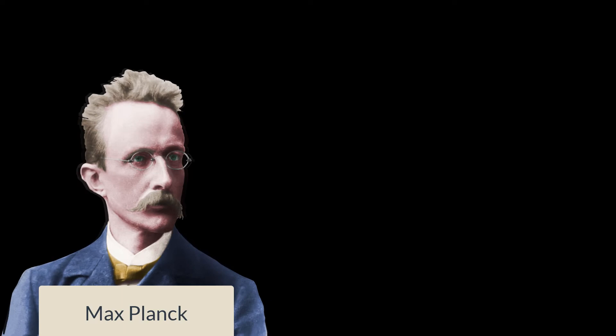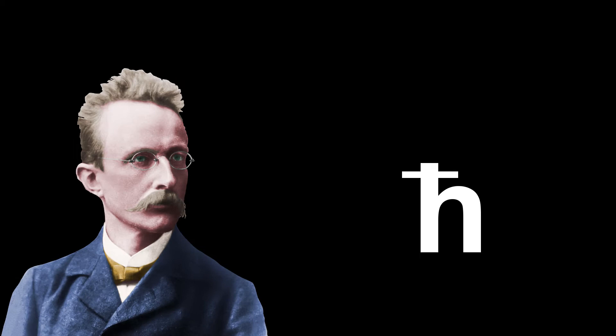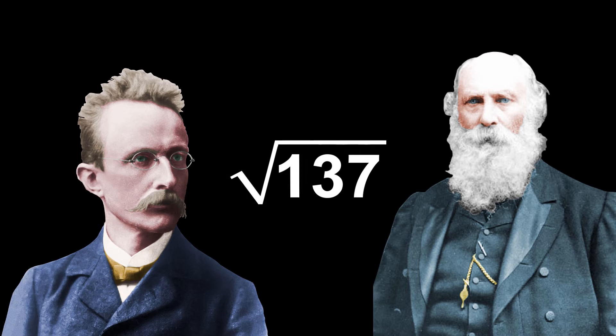Almost 30 years later, Max Planck produced his own universal constants. Identical to Stoney's, except Planck replaced electric charge with his own quantum of action. The effect of this was relatively small. Stoney's units and Planck's differ by a factor of root 137, related to the fine structure constant.